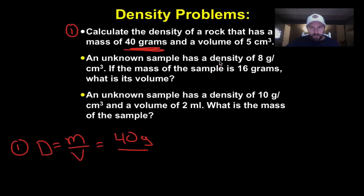Over volume, 5 centimeters cubed. 5 centimeters cubed. So, 40 divided by 5, that's 8 grams per centimeter cubed. That's it. That's your density right there.